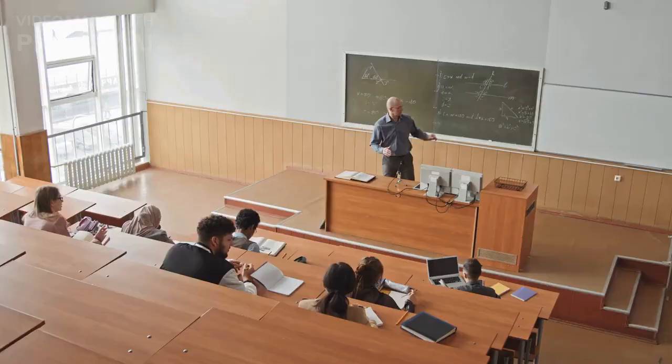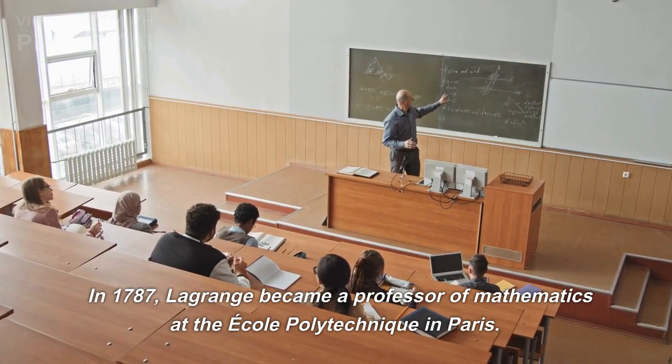In 1787, Lagrange became a professor of mathematics at the École Polytechnique in Paris.